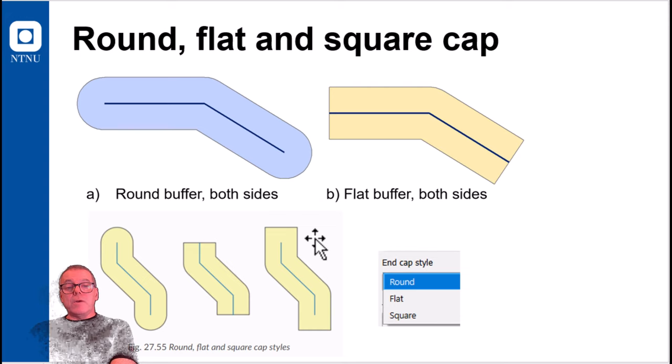Or you may also in QGIS have the option to have it squared. So many options here. I haven't seen many examples of why you should have a flat or a squared end of a buffer, but I'm sure there are.